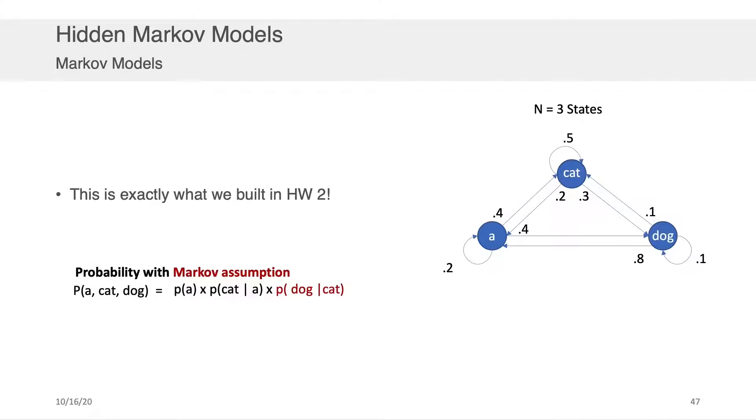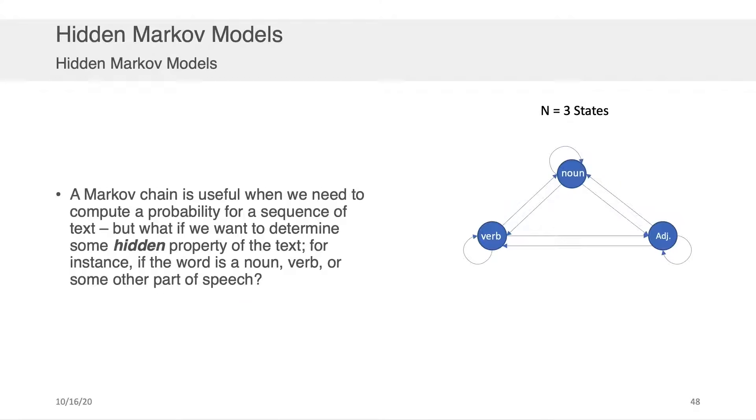So this concept should actually already be familiar to you because it's exactly what we did in homework 2. Remember we built that dictionary and we did Laplacian smoothing on it. We had these priors for each of the words. We had the transition probabilities to each of the next words. Everything that you did there was actually building the foundation for a hidden Markov model or a Markov model actually. We're going to speak about hidden Markov models next.